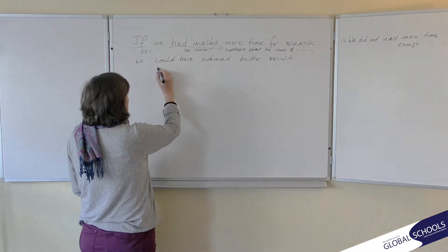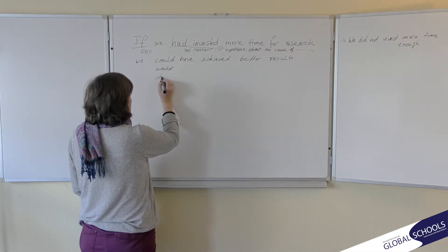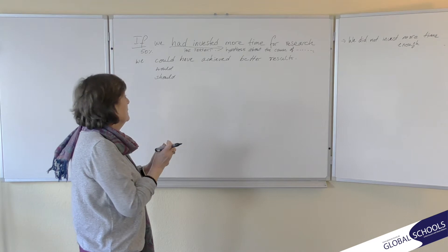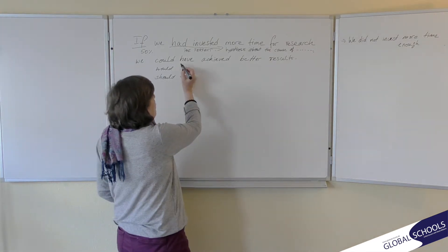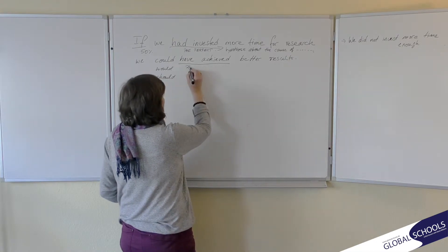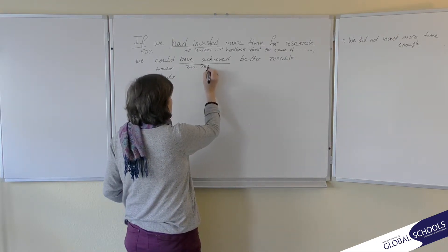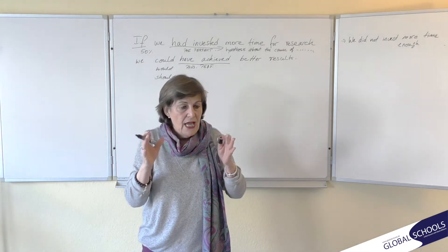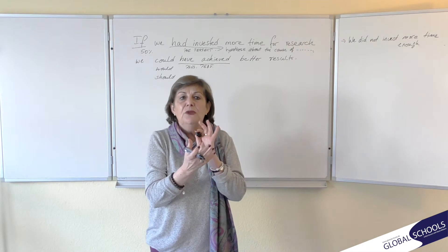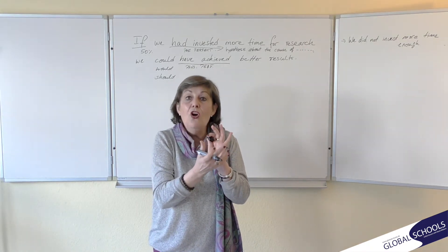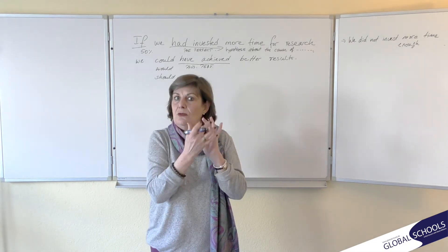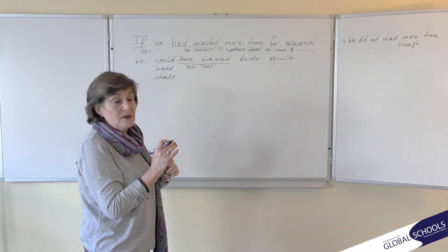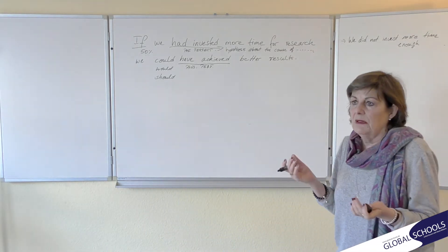Here we have could, would, should. Please check out the second conditional again — the same meaning in its actual form. We could have achieved better results. Basically, what I'm using here is a present perfect. Remember, present perfect always shows us — like 'I have been to the United States and I love it' — it always shows an effect on now. And the same thing here in our third conditional: we could have achieved better results, meaning all the results we have achieved are really next to nothing.